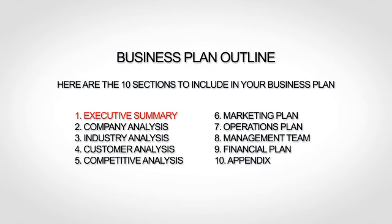The first section is your executive summary, which is essentially the introduction to your business plan. The next section is your company analysis, which gives a little more background. Next up is your industry analysis, where you talk about your market and trends. The fourth section is your customer analysis, where you go more in depth about your target market. The fifth section is your competitive analysis, where you provide an analysis of your competition, including what differentiates you from your competitors.